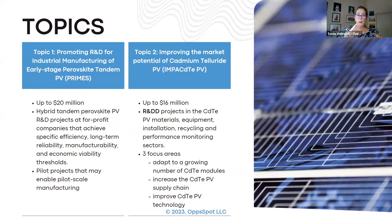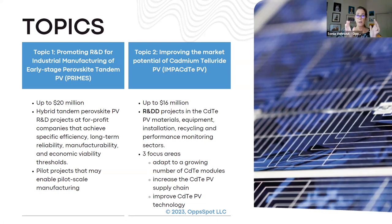There are two topics. Topic one, called PRIMES, is about promoting research and development for industrial manufacturing of early-stage perovskite tandem PV. There's up to $20 million in funding for R&D projects for for-profit companies. The goal is to reach specific efficiency, long-term durability, manufacturability, and economic viability thresholds. These are pilot projects that will enable scalability of manufacturing.